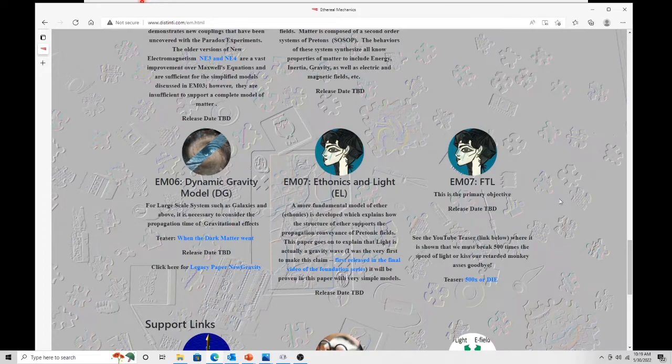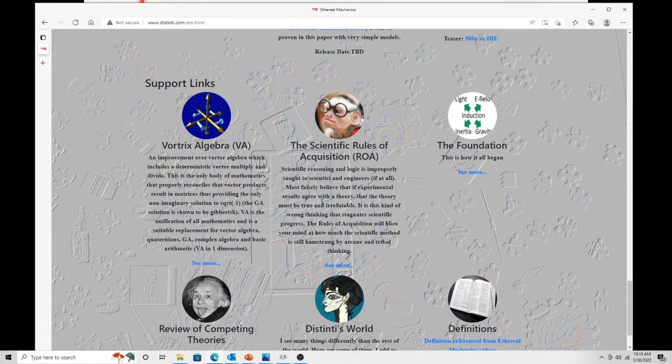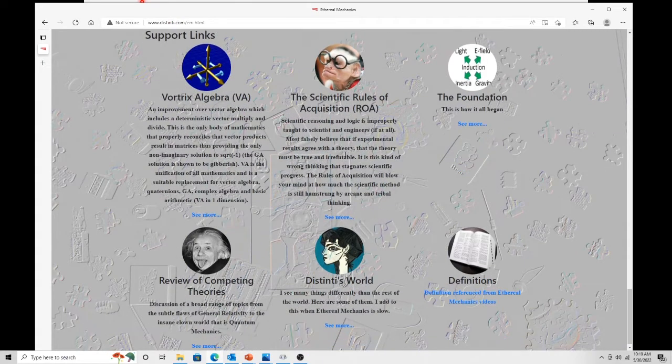And so don't all these other guys all the way down. EM04 is correct. That will be new electromagnetism v5. EM05 will be the cosmology paper. I got to update this. And these are TBD, TBDerm. But now down here you can find all the support links. Here's where you get to the paper for Vortrex algebra.